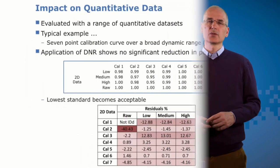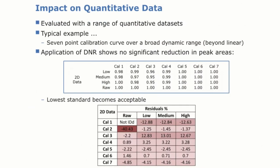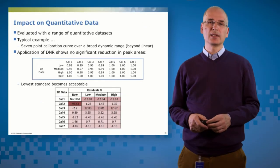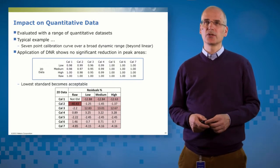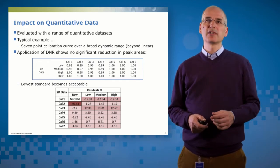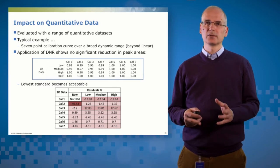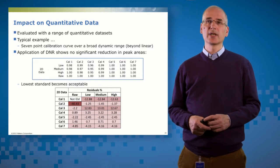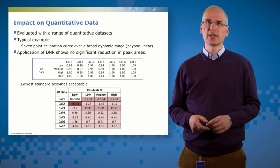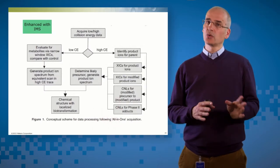So what about the impact on quantitative outcomes? We want to make sure that when we process quantitative data that we don't get any different results because we've applied these kinds of dynamic noise reductions. So we've looked at these approaches with a range of quantitative data sets using calibration curves and QCs just looking at the impact on quantitative outcomes. And here's a representative example. So a seven point calibration curve over an appropriate calibration range. And when we just do the two-dimensional peak finding and quantitation there's no real impact on peak areas. And actually in the dynamically noise reduced data some of the low calibration standards actually come into specification whereas previously they were outside. So you can see on calibration point two actually comes inside at 20 percent value whereas it was out before.